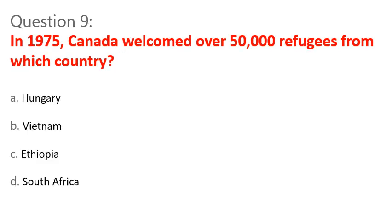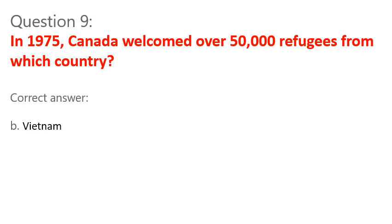Question 9. In 1975, Canada welcomed over 50,000 refugees from which country? A. Hungary. B. Vietnam. C. Ethiopia. D. South Africa. Correct answer: B. Vietnam.